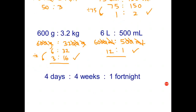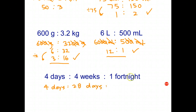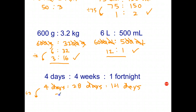For the last question involving days, weeks, and fortnights, convert everything into days. We have 4 days; 4 weeks is 4 times 7, which is 28 days; and 1 fortnight is 14 days. Now that we have the same units, cross them out, giving 4 is to 28 is to 14. They're all even, so divide by 2: 2 is to 14 is to 7. That is as simple as we can make it.